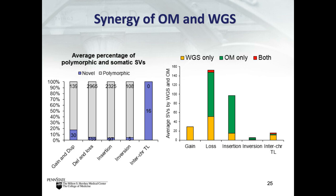The two methods are synergistic: whole genome sequencing is better at detecting gains, while optical mapping is better at detecting losses, insertions, and inversions. Both methods are effective at detecting translocations. Overall, the combination of WGS and optical mapping provides more comprehensive structural variant detection than either method alone.